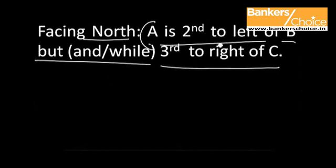The first part of the sentence is A is second to the left of B. So if B is placed here, A should be towards the left of B two places away. So A will come in this direction.